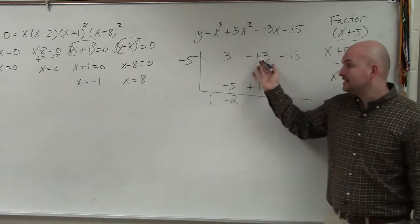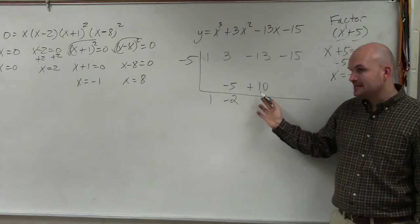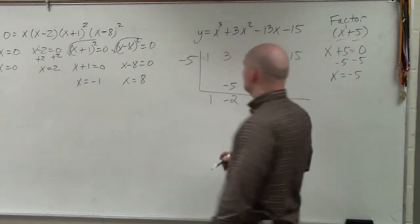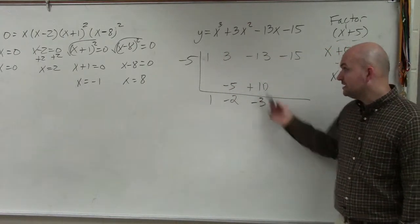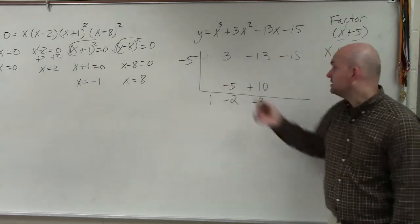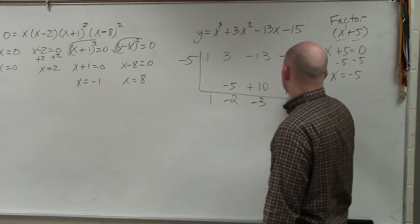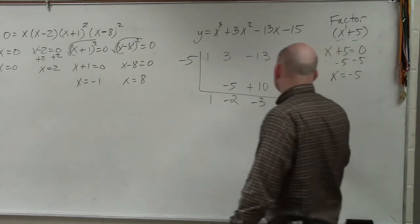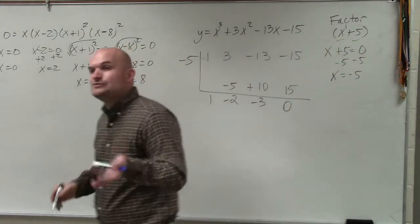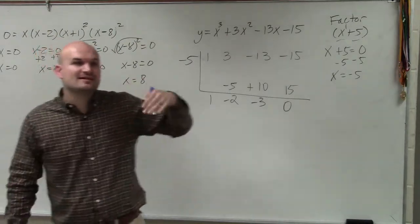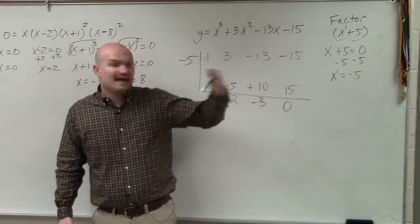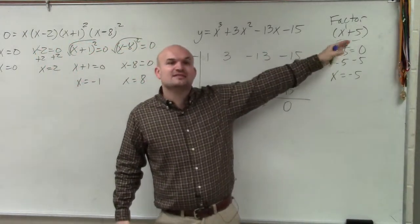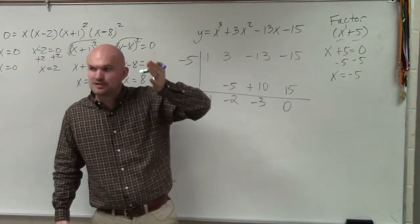Then you multiply negative 2 times negative 5, which is positive 10. Negative 13 plus 10 is going to give you a negative 3. Then negative 3 times negative 5 is now going to give you a positive 15. Negative 15 plus 15 is 0. So that means you have a remainder of 0. So what that does is that just validates that x plus 5 evenly divides into this polynomial because there's a remainder of 0.